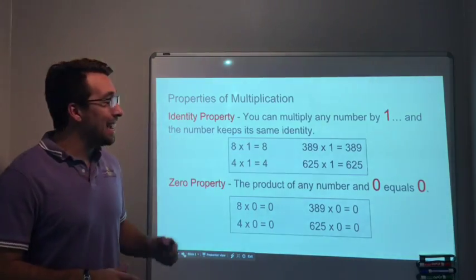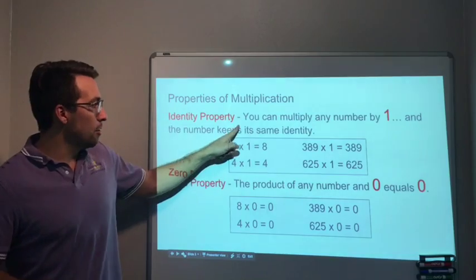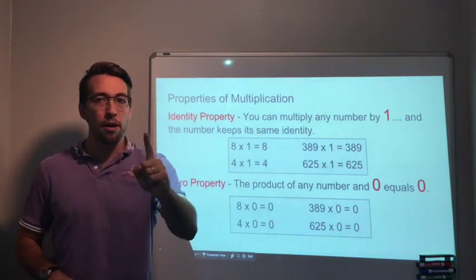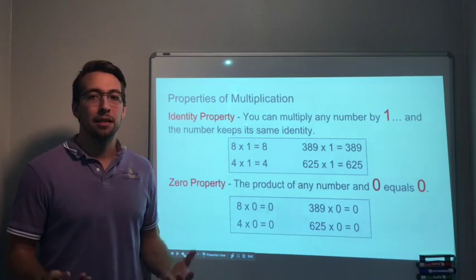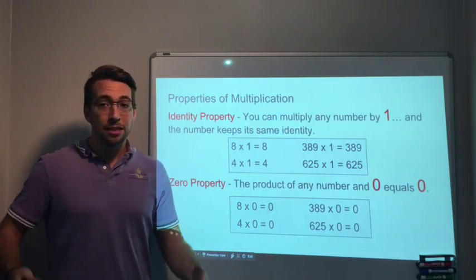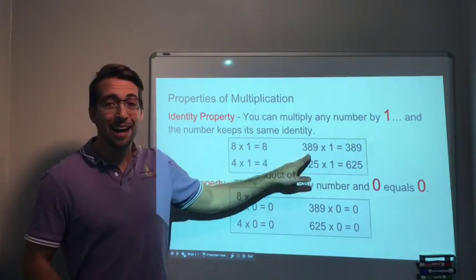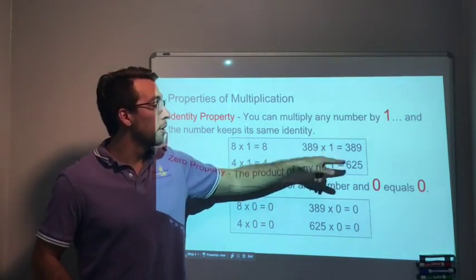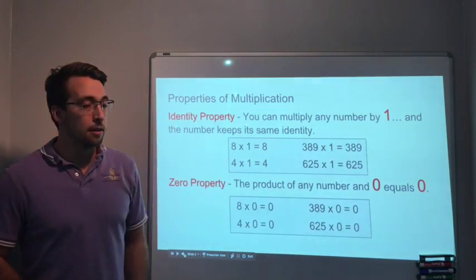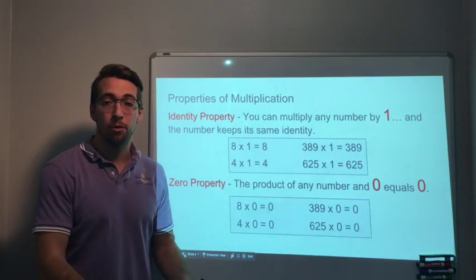Two other properties: the identity property and the 0 property. You can multiply any number by 1, and the number keeps its same identity. 8 × 1 is 8. 10 × 1 is 10. 4 × 1 is 4. 389 × 1 is 389. It doesn't matter the number that you multiply by 1, you're going to get that same number.